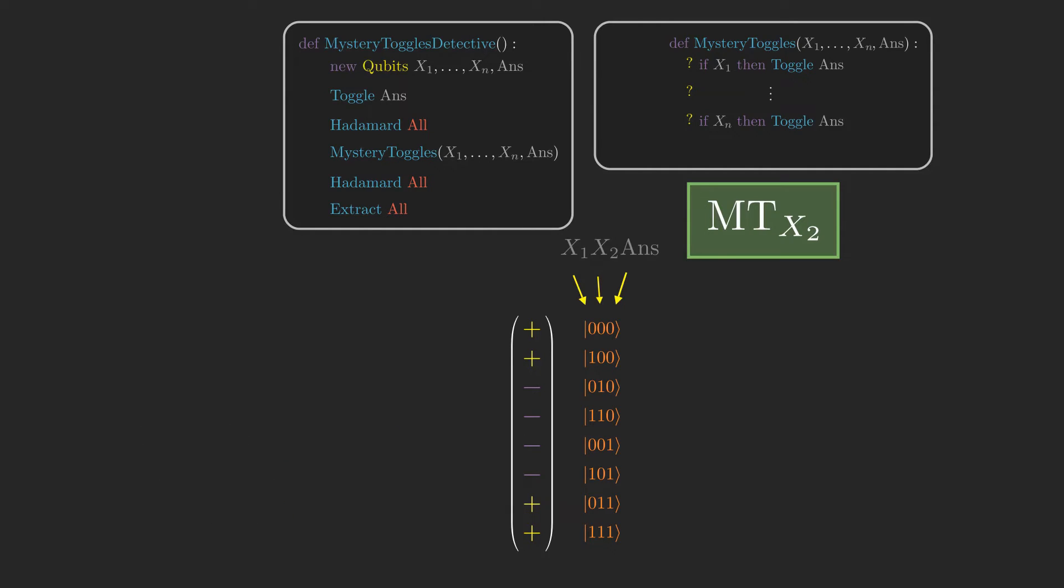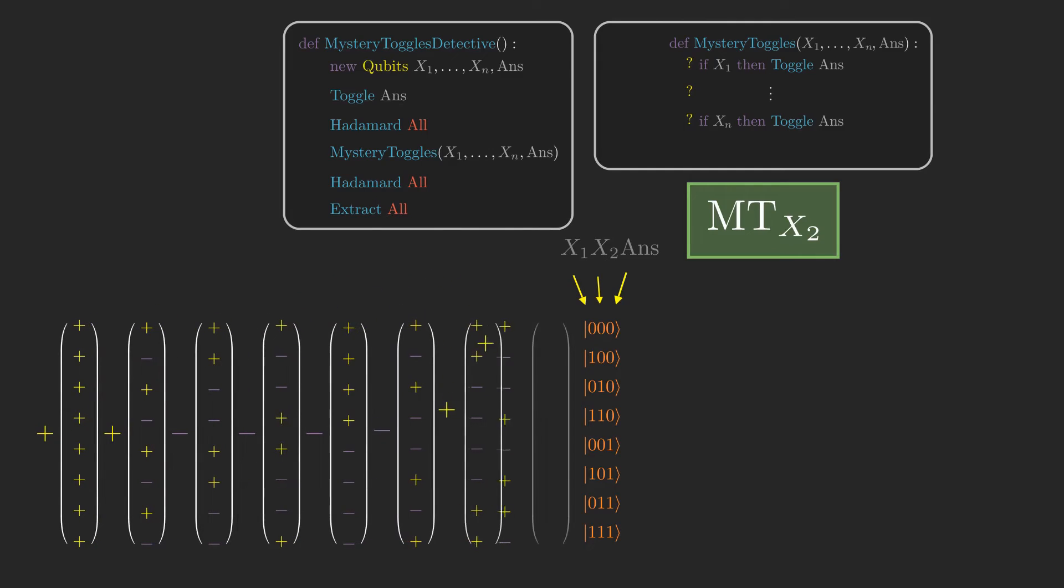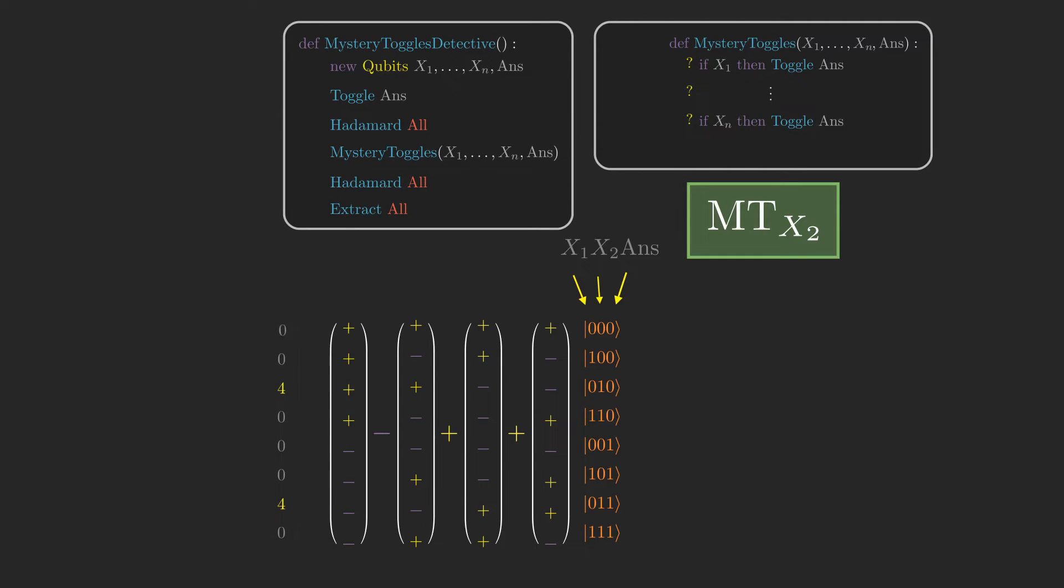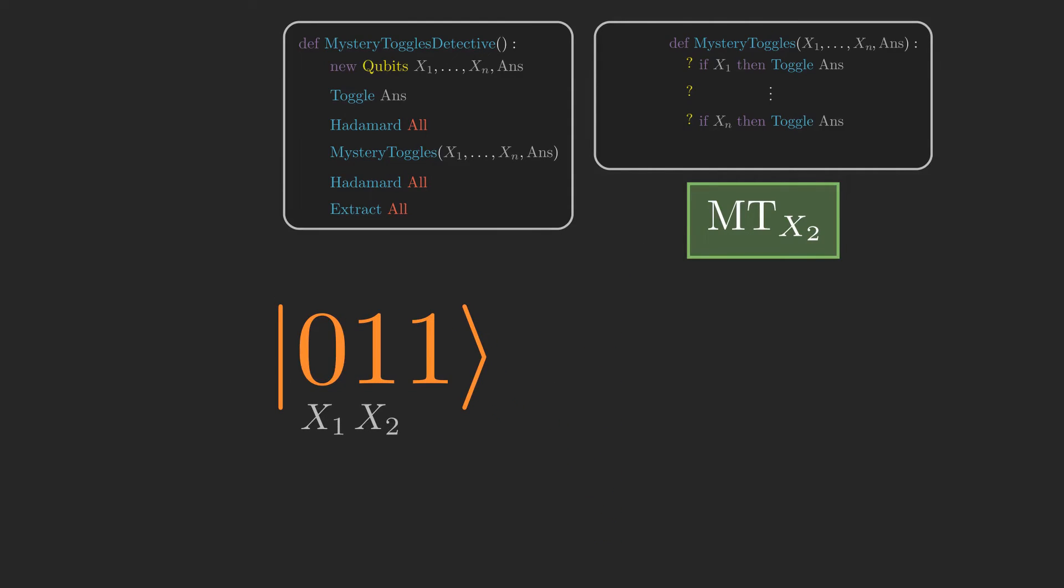The missing piece to the puzzle is another Hadamard all, and this time the purpose of this instruction is completely different from how we used it a moment ago. Watch what happens with the matrix multiplication. It turns out that the amplitude gets cancelled on all but one of the basis states, which precisely encodes the version of mystery toggles that was used. So when we measure all of the qubits, we learn what that version is with probability 1.